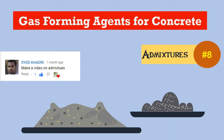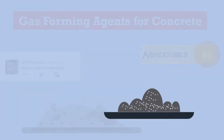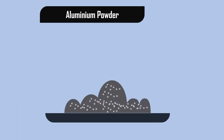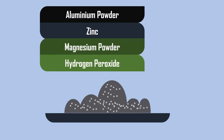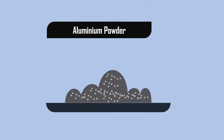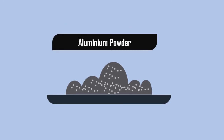Gas forming agents for concrete. A gas forming agent in concrete is a chemical admixture which includes aluminum powder, zinc, magnesium powder, and hydrogen peroxide. Most commonly, aluminum powder is used as a gas forming agent.